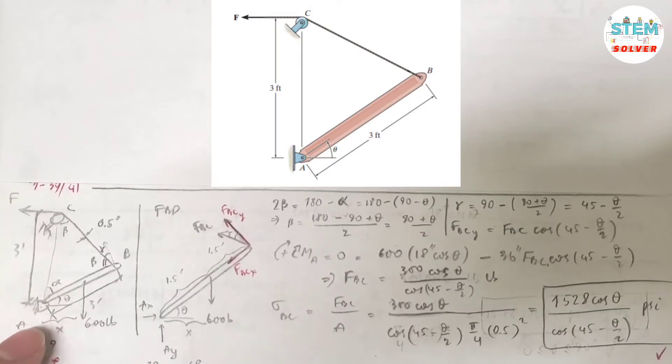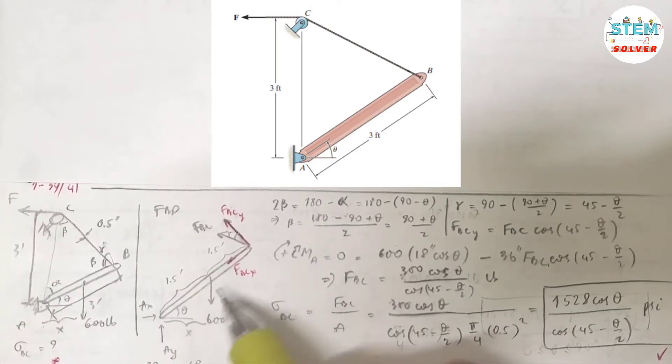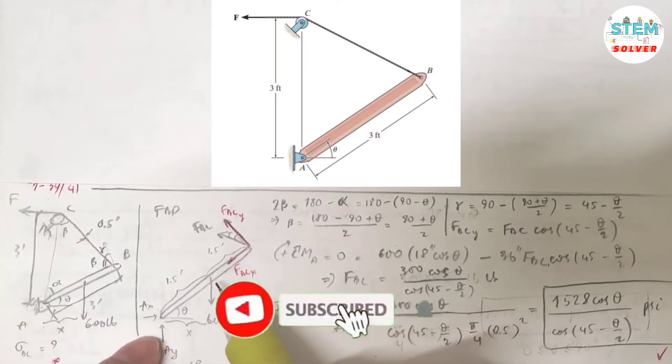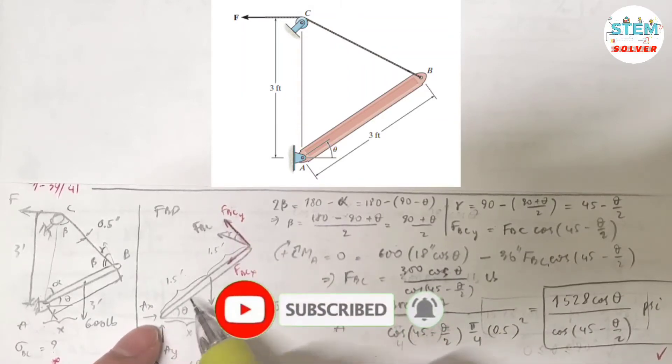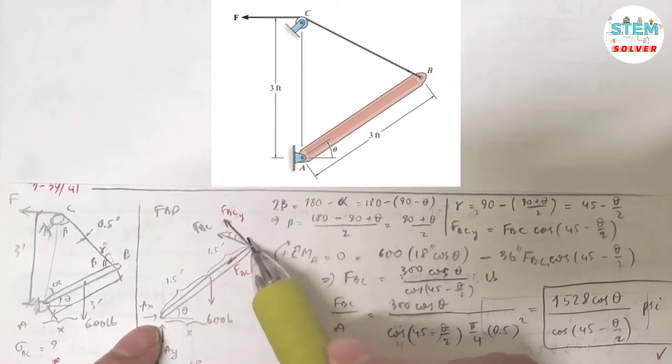Here's a figure for it and I have a free body diagram for it being drawn here. So you have this boom and here's the angle and here's the force of the cable which is FBC.